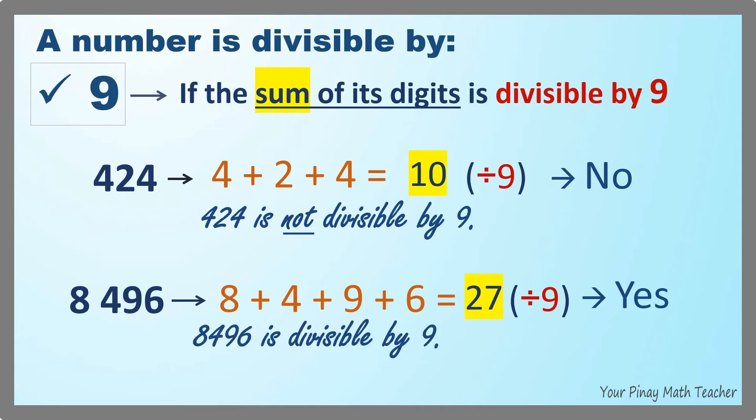Therefore, 8,496 is divisible by 9. So 9 is a factor of 8,496.